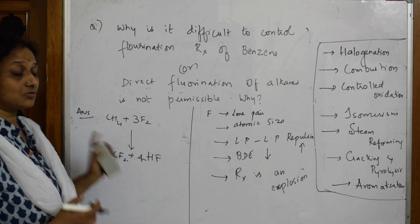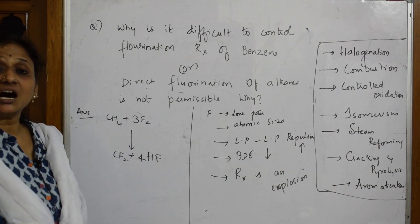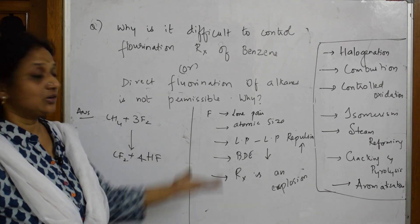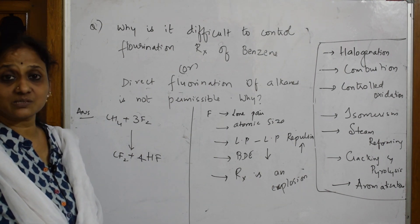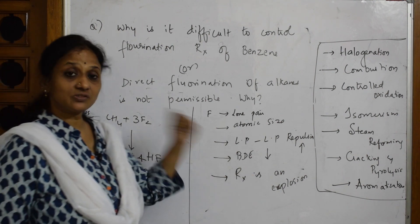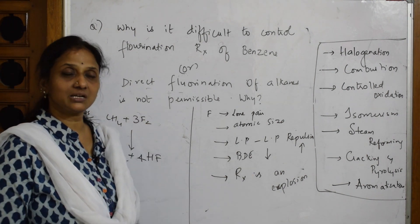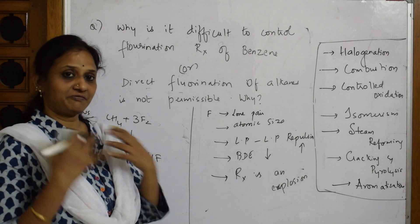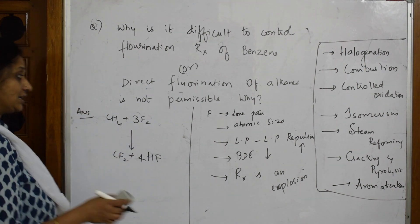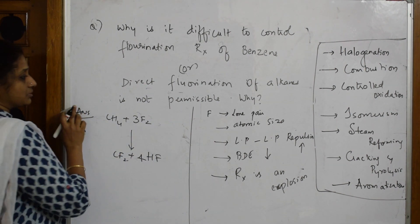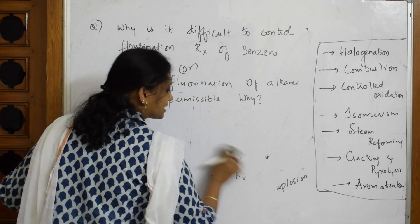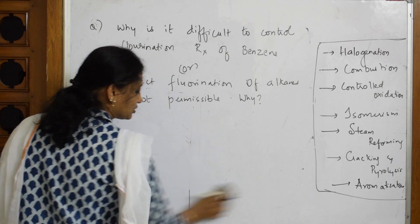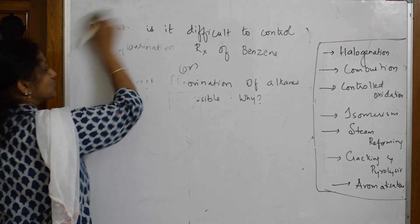This is what is causing the explosion for fluorine molecule. Because of these reasons, the fluorination reactions are highly explosive in nature: lone pair presence, next important the atomic size is small, because of that bond dissociation enthalpy is less, means automatically the reaction is very fast and it is explosive. Next important thing, what you should remember when I conclude the fluorination and all these reactions.